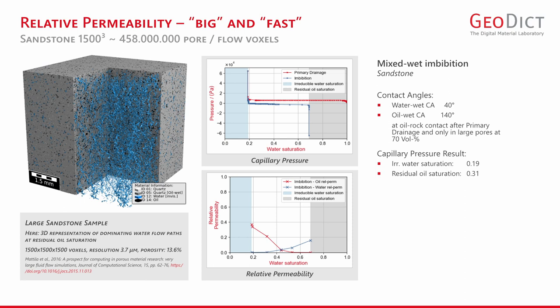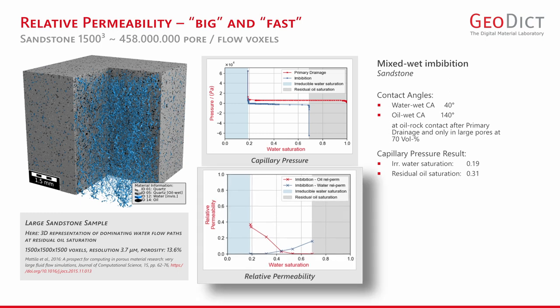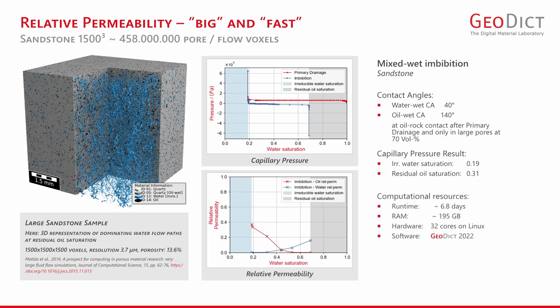The computation with our extended pore morphology method results in a residual oil saturation of 31%. Based on the resulting set of fluid distributions, we also computed the relative permeability curve as plotted here at the bottom. This entire computation required a runtime of less than 7 days and less than 200 GB of working memory with our high-performance settings in a 32-core Linux environment. This current runtime of only 7 days for such large structures is by far faster than the hundreds of days required by a lab experiment.